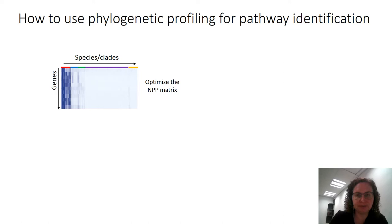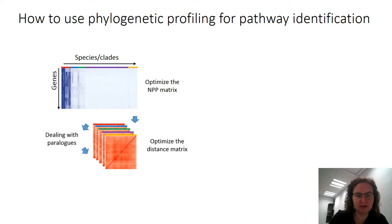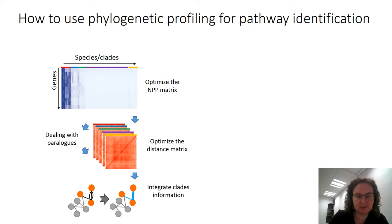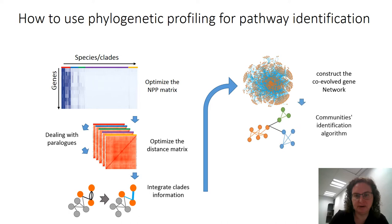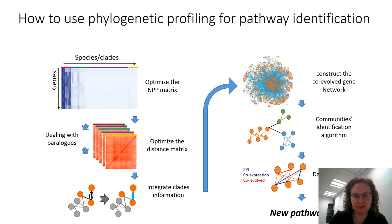So how do you look for new biological pathways? We start with a phylogenetic profiling matrix which includes genes and species divided into clades. The next stage is to optimize the distance matrix, deal with paralogs, deal with integration of the clades into a single piece of information, build the co-evolved network, identify communities using an algorithm, and then data integration to find new pathways.